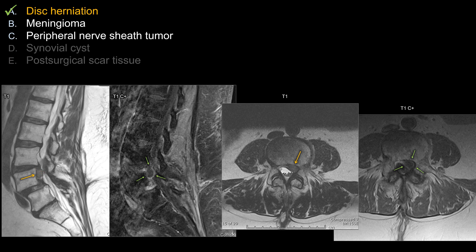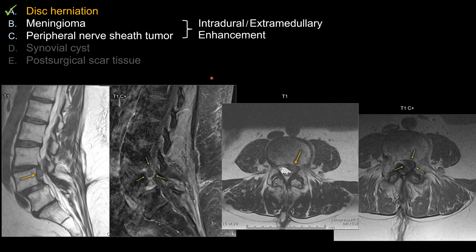Looking at the other answer choices that do not work as well: for choice B and C, meningioma versus schwannoma or peripheral nerve sheath tumor — first, the location is off. Both lesions are the top two differential diagnoses for intradural extramedullary location, whereas this is an epidural lesion. Also, the enhancement is wrong: meningioma and schwannoma should enhance avidly and centrally, whereas a disc fragment lacks central blood supply and should not enhance centrally. So both location and enhancement pattern are wrong for choices B and C.